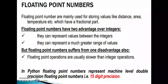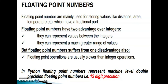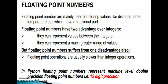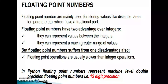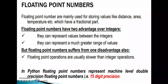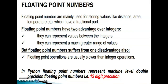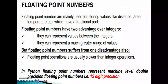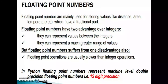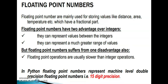Floating point numbers are mainly used for storing values like distance, area, temperature, etc., which have a fractional part. Floating point numbers have two advantages over integers: they can represent values between integers (e.g., 5.1, 5.2, 5.3 between 5 and 6), and they can represent a much greater range of values. However, floating point operations are usually slower than integer operations.